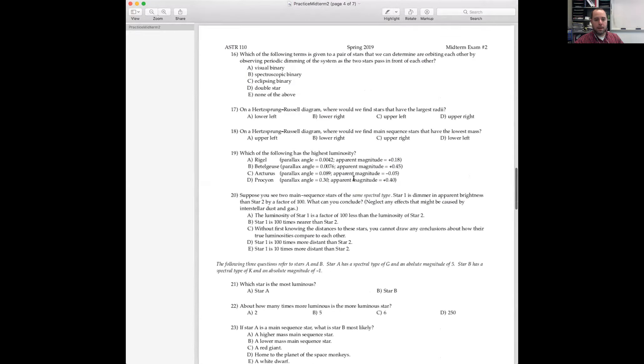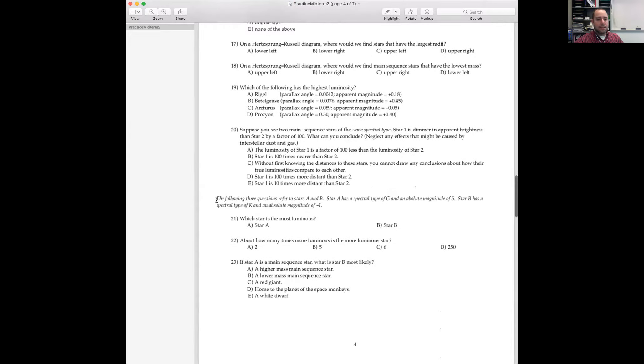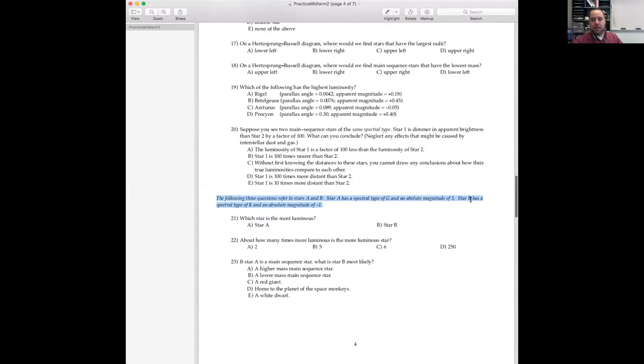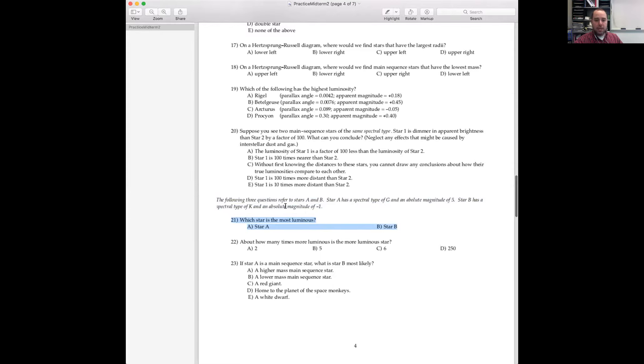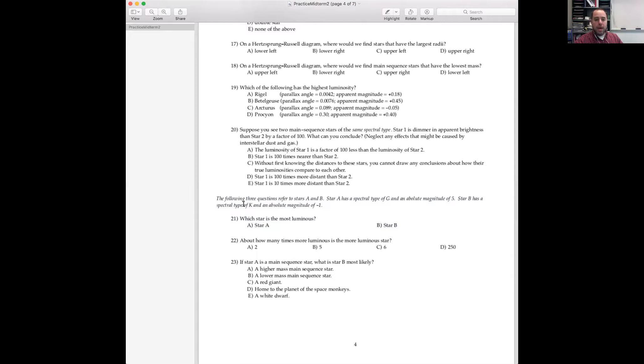Three minutes left. I feel like this is the countdown to doom or something. 22. The following three questions refer to stars A and B. Star A has a spectral type of G and absolute magnitude of 5. Star B has a spectral type of K and an absolute magnitude of 1. So it should be clear, which is the most luminous. You don't have to do any math at all. The one with the smaller apparent magnitude is the more luminous star. And so that would be star B. The answer to 22 is how many times more luminous is this star. Again, this is the magnitude equation.